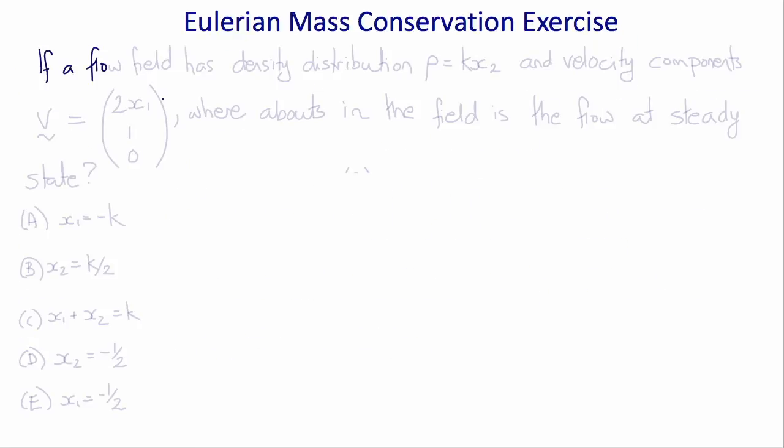Let's do an exercise making use of the Eulerian form of mass conservation. If a flow field has a density distribution rho equals k times x2, and velocity components v equals (2x1, 1, 0).